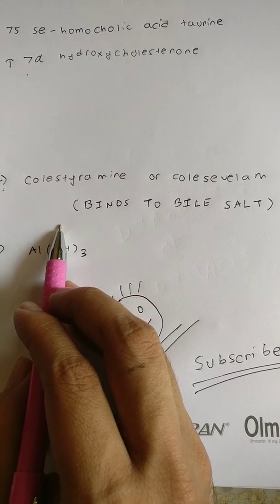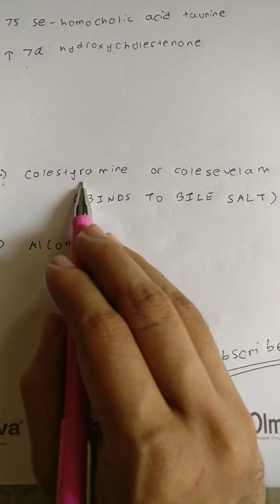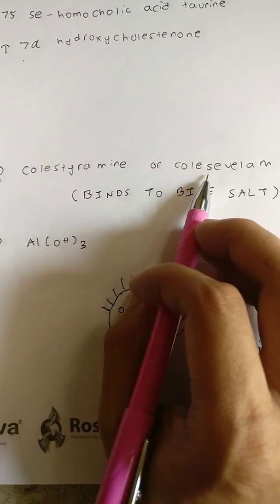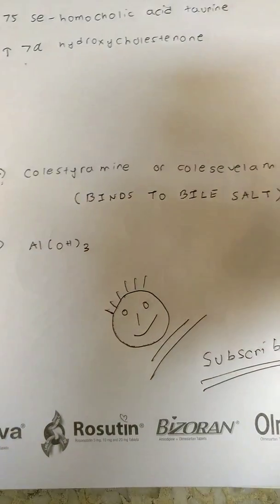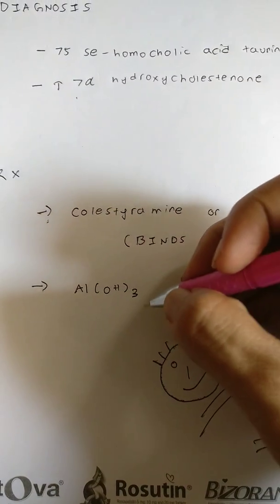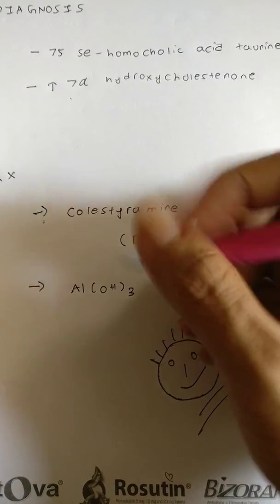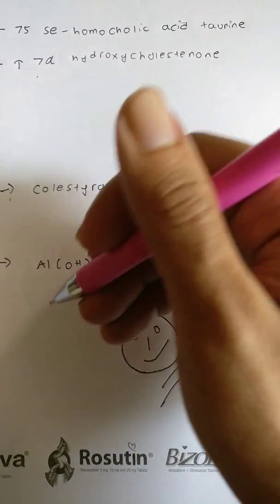The treatment is mainly by the use of bile salt binding agents, for example cholestyramine or colesevelam. They usually bind to the bile salt and help to improve the symptoms of diarrhea. As an alternative, aluminum hydroxide is used.